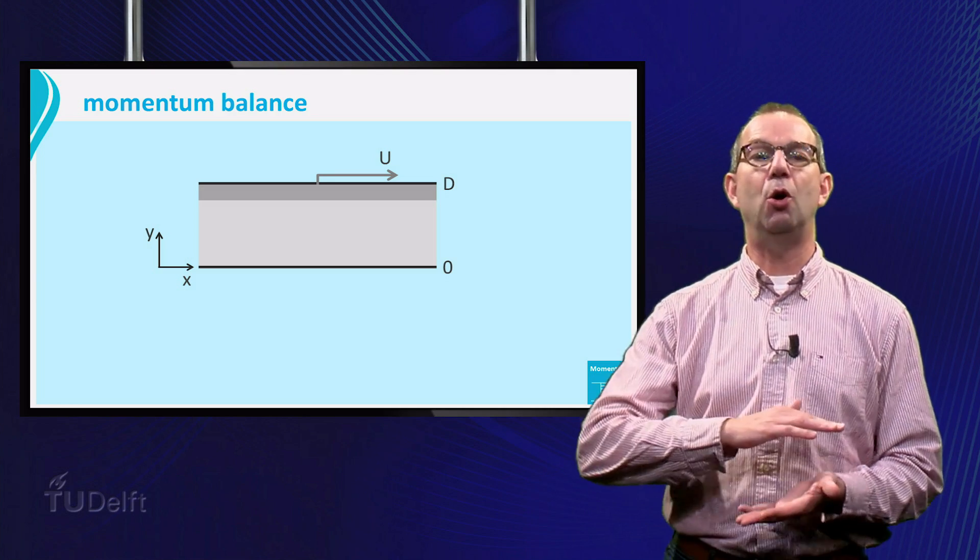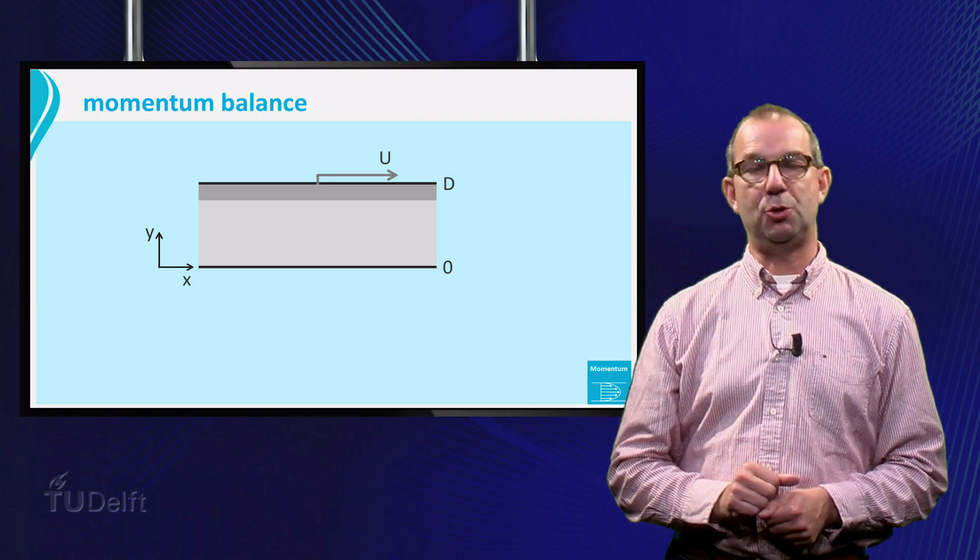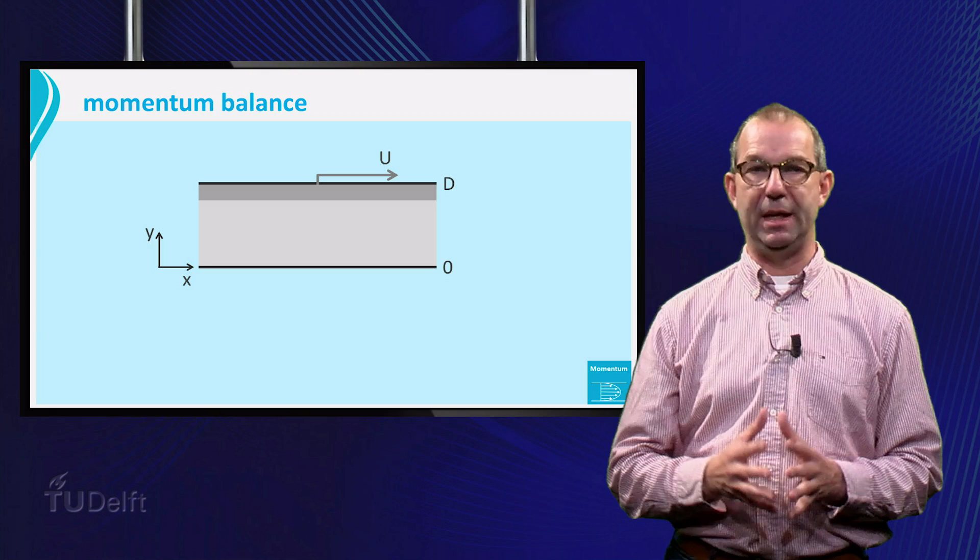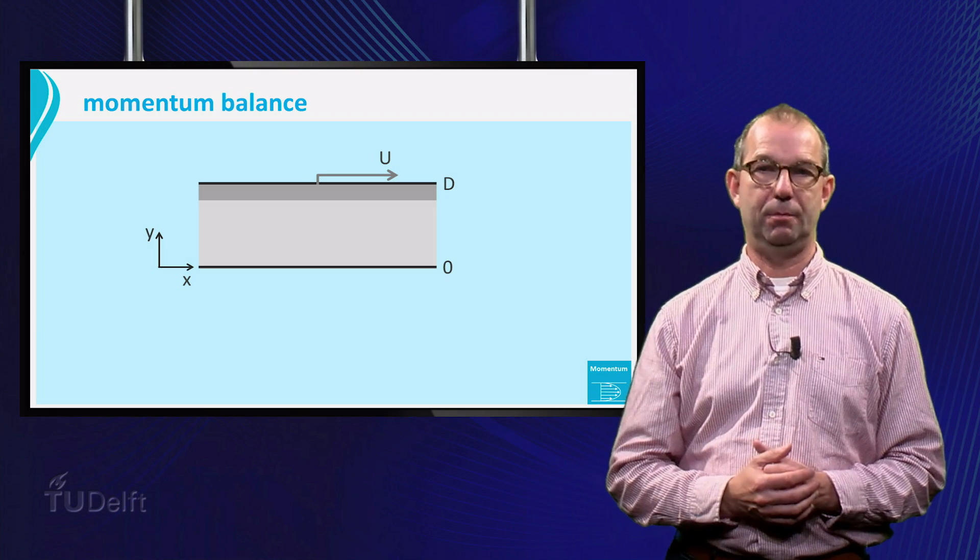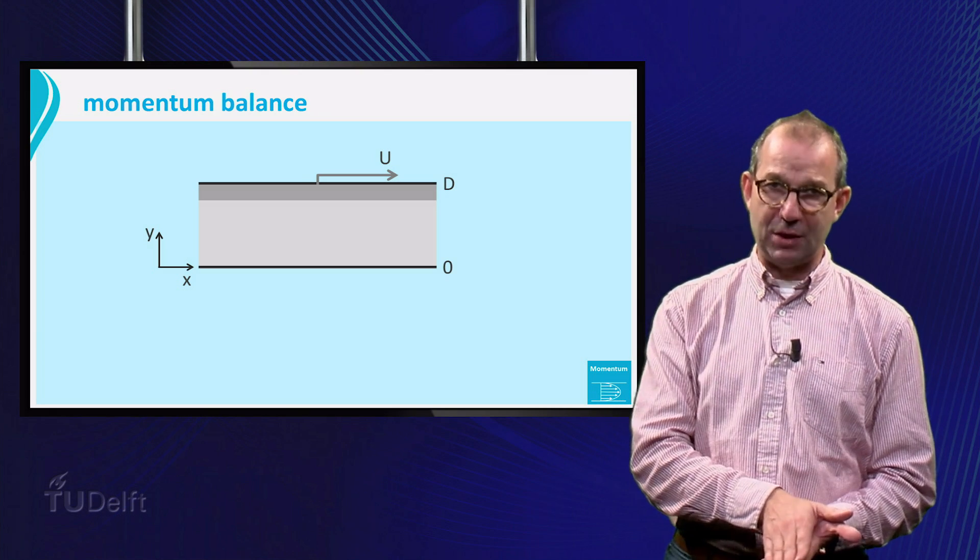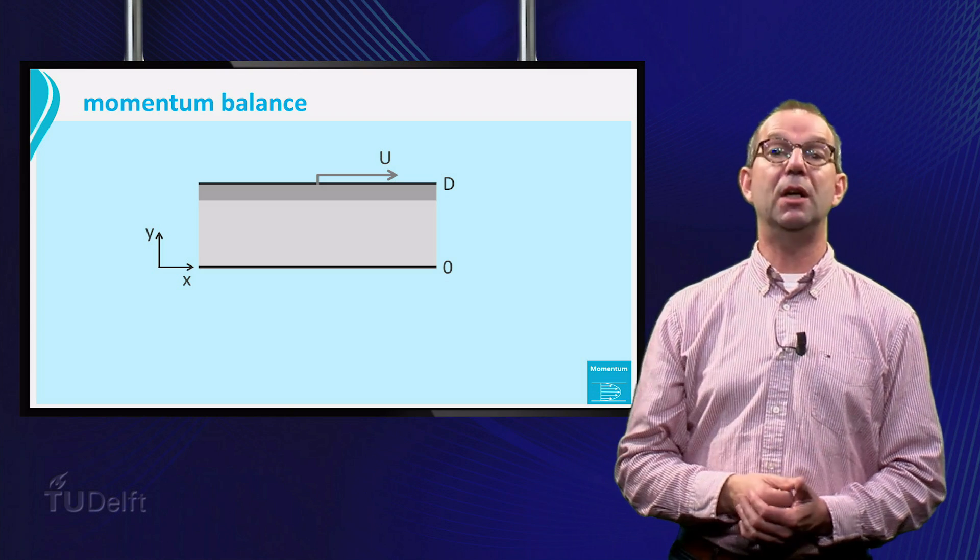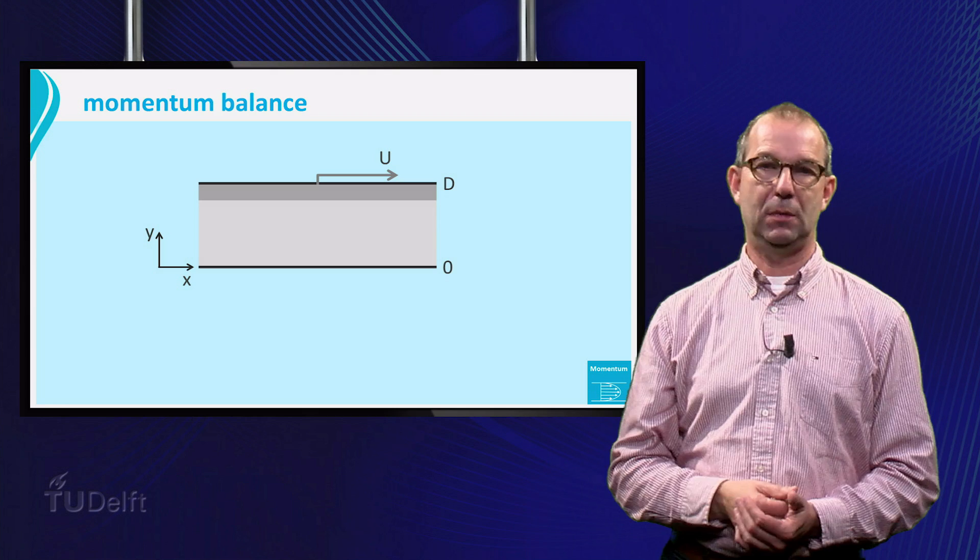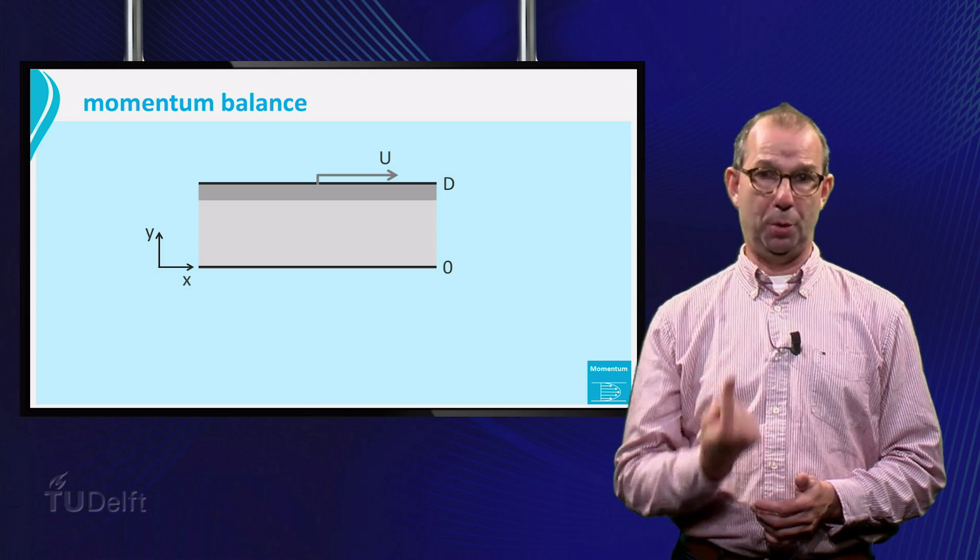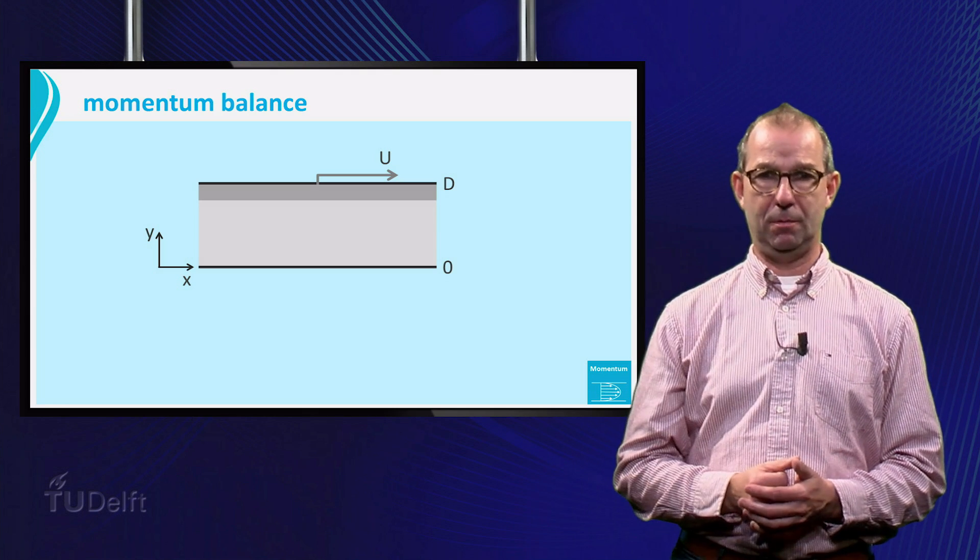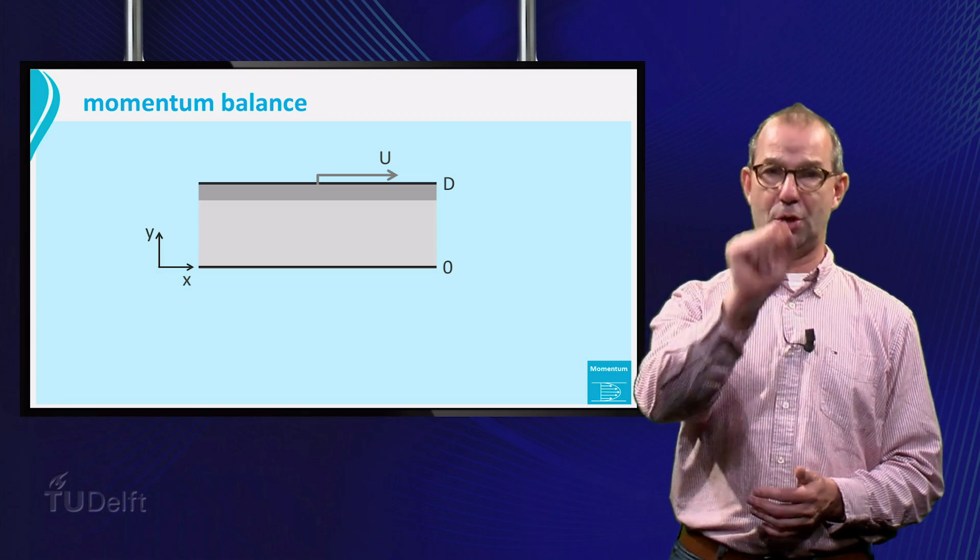Our first case is a horizontal layer of fluid between two very large plates. Gravity is absent. The bottom plate is fixed, while the top plate is moving at a constant velocity u in the horizontal direction. The y-coordinate is perpendicular to the plates. The x-axis is horizontal.